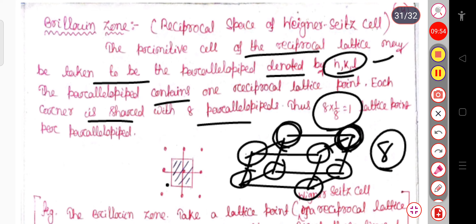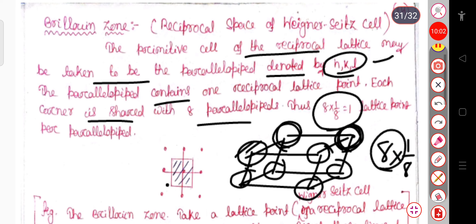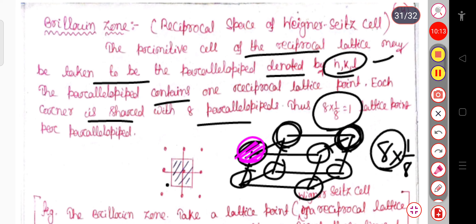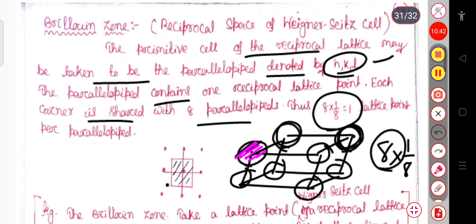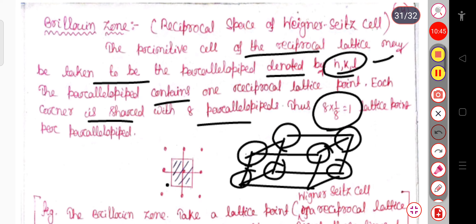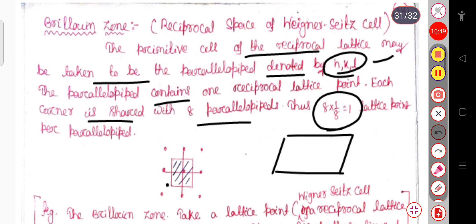For a parallelepiped structure with eight corners, each corner atom is shared by eight unit cells. So each cell contains one-eighth of each corner atom, and eight times one-eighth equals one total atom per parallelepiped. We can say that one lattice point — which may be an atom, molecule, or ion — is present per parallelepiped.